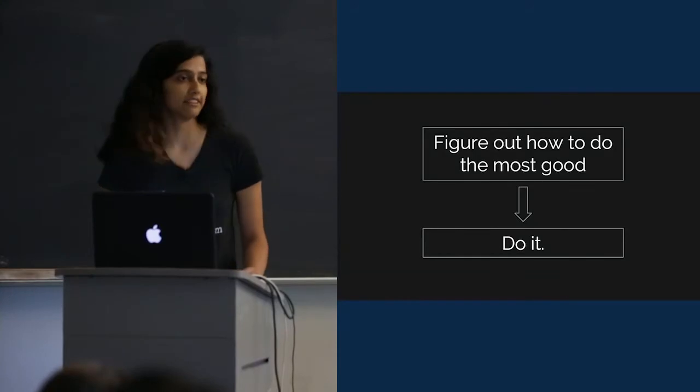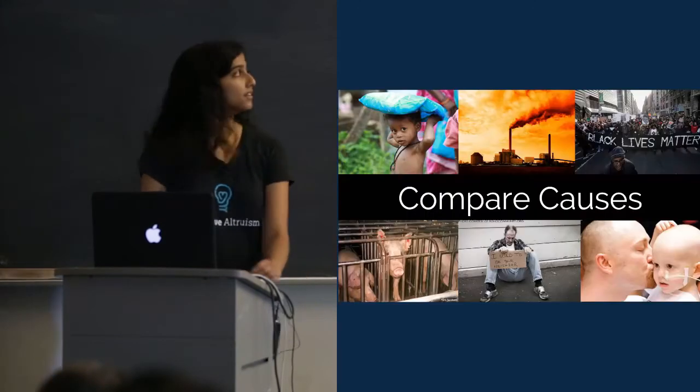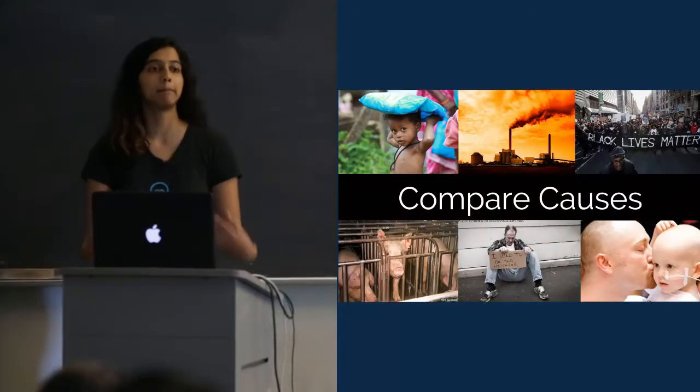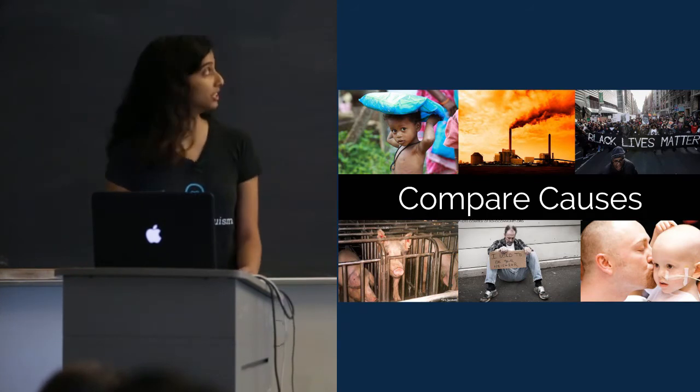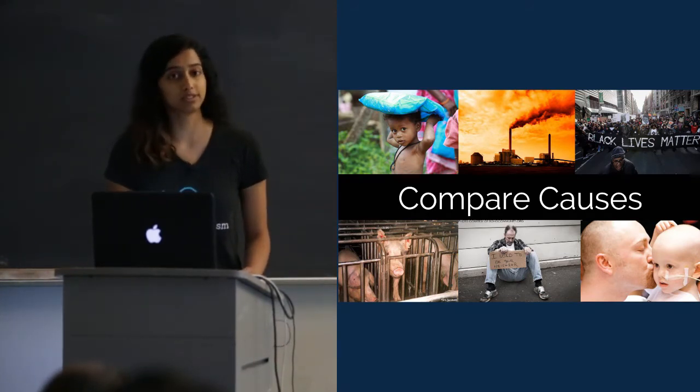But one insight from Effective Altruism really can make it a lot easier. And that's cause prioritization. The idea that you should actively compare different causes, figure out how much good each one does, and only support the causes that do the most good.